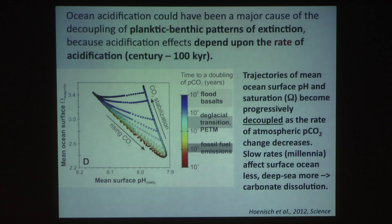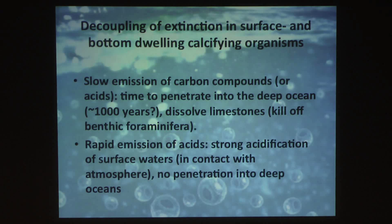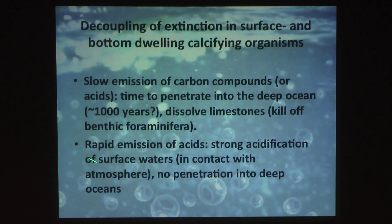And so what I then started to speculate about is that the decoupling of extinction in surface and bottom-dweller calcifying organisms may have to do with the rate of emission of carbon compounds or other acids. If there's time for them to penetrate into the deep ocean, you will dissolve limestones and kill off deep-sea benthic forams. Whereas if you emit them very rapidly, then you will cause strong acidification of surface waters in contact with the atmosphere, but in fact you will have buffered the system before it can penetrate into the deep sea. So this will be very bad for stuff that calcifies in the surface waters, but not so much for the deep ocean.